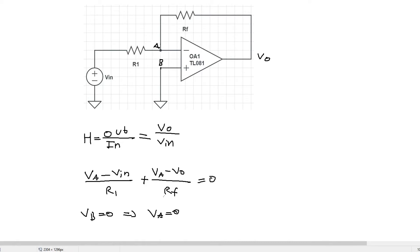So now let's insert VA equals zero in this equation. We get minus Vm over R1 minus VO over RF equals zero.